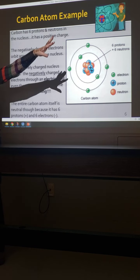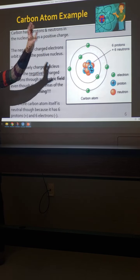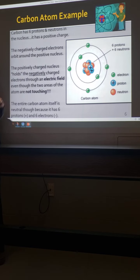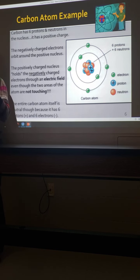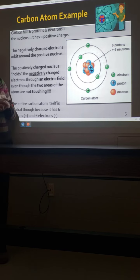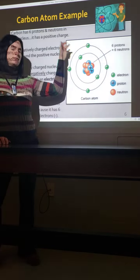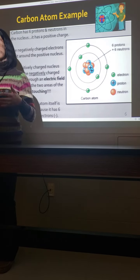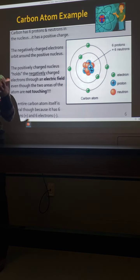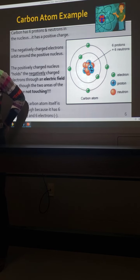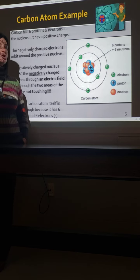All elements on that periodic table are naturally neutral, meaning that however many protons you have, that's the exact number of electrons you also have. Neutral means no charge. So if an atom has six protons, it has six total electrons, meaning it's not charged. For there to be an electric field, or to respond to one, something has to be charged.